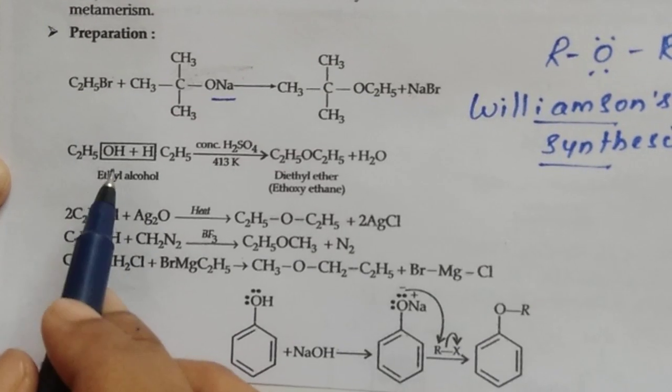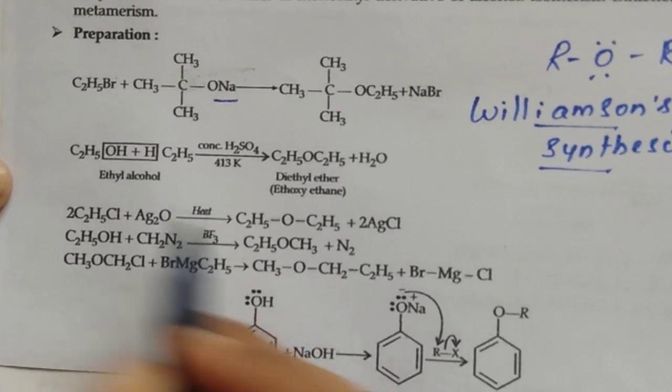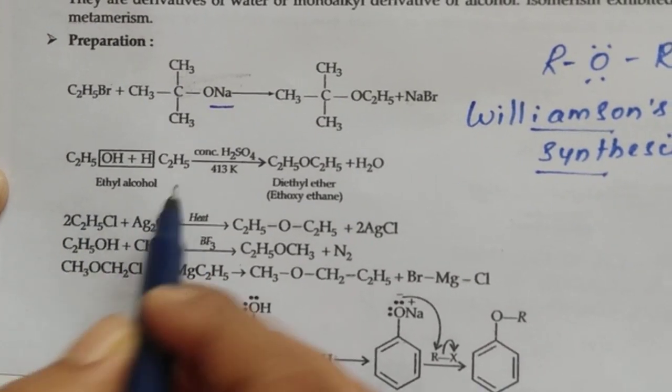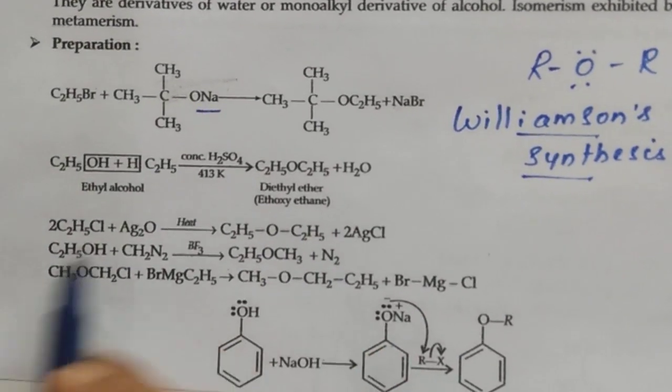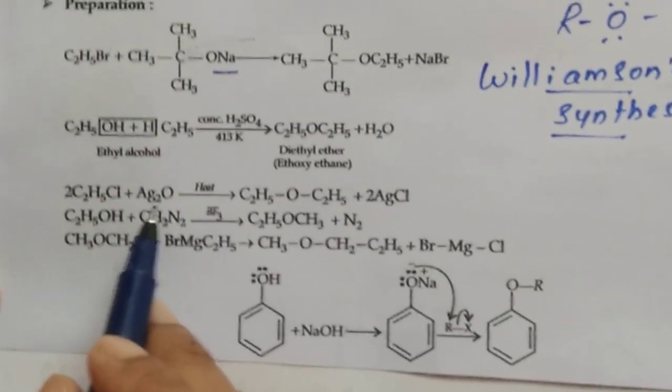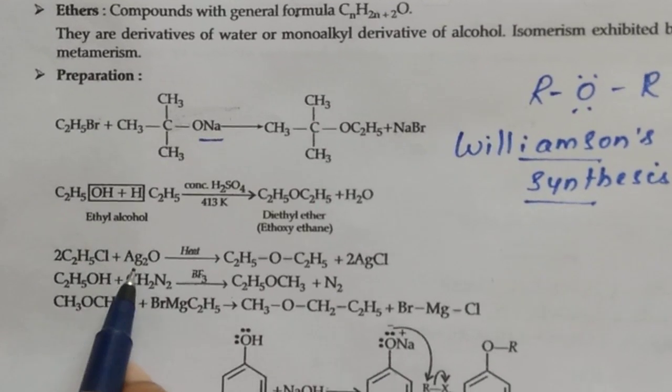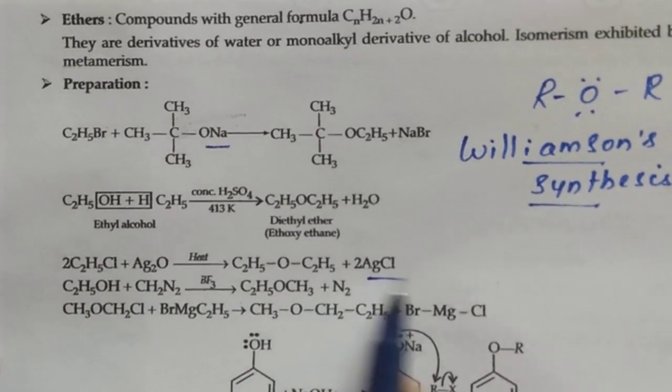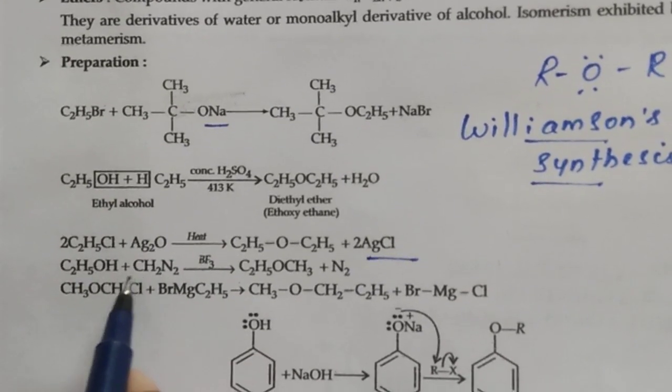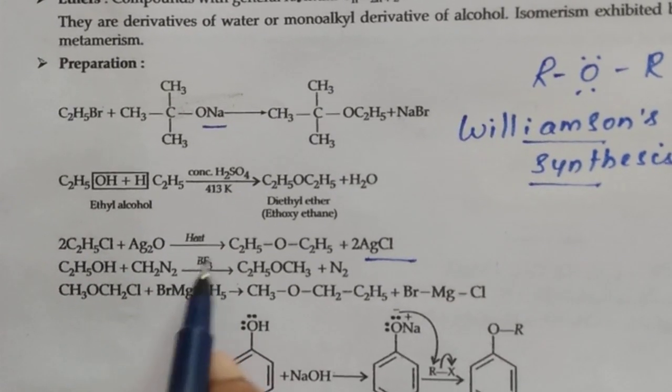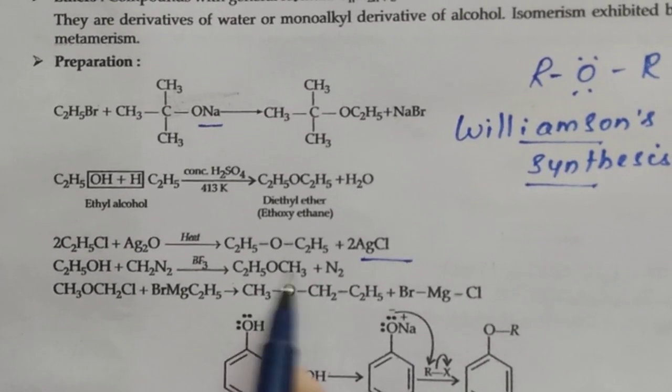Then ethanol undergoes reaction with—here this is an alkane. Ethyl alcohol reacts with alkane in presence of sulfuric acid gives diethyl ether. Again, Ag2O, silver oxide undergoes reaction with 2 moles of ethyl chloride. 2 AgCl is precipitated out and diethyl ether is formed here. Diazomethane also reacts with ethanol. It gives, in presence of BF3, methyl ethyl ether.